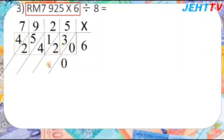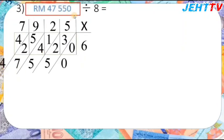Then we add the carry values: 0, then 3 plus 2 equals 5, then 1 plus 4 equals 5, then 5 plus 2 equals 7, and the last one is 4. So the answer here is RM47,550.